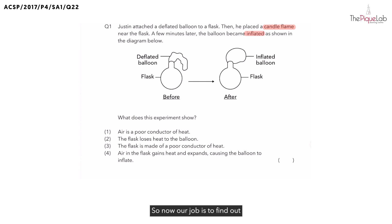Now our job is to find out what this experiment shows us. So let's try and understand this. We know that there was a candle flame. I'm just going to draw this out. A candle flame was placed underneath the flask, and the moment this happened, the balloon was inflated.